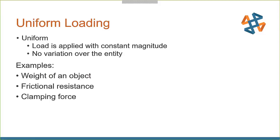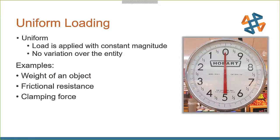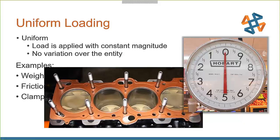For this presentation, we're also going to assume it's not varying over time. Very simple examples of uniform loading include a box sitting on a table, the weight of an object, things you'd see in a supermarket — just gravity loading, frictional resistance, bolts attaching two objects together, clamping force like an engine block. Those are all considered uniform loading scenarios.